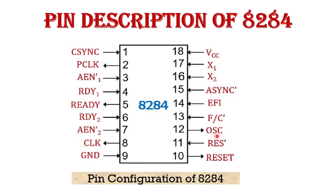Pin 12 is the oscillator output pin. The oscillator signal generated by the 8284 is directly given to the 8086 or 8088 microprocessor. Pin 11 is RES bar, which is an input pin used to reset the 8284 clock generator. Pin 10 is the RESET output pin generated by the 8284, and this output is connected to the 8086 reset input pin.